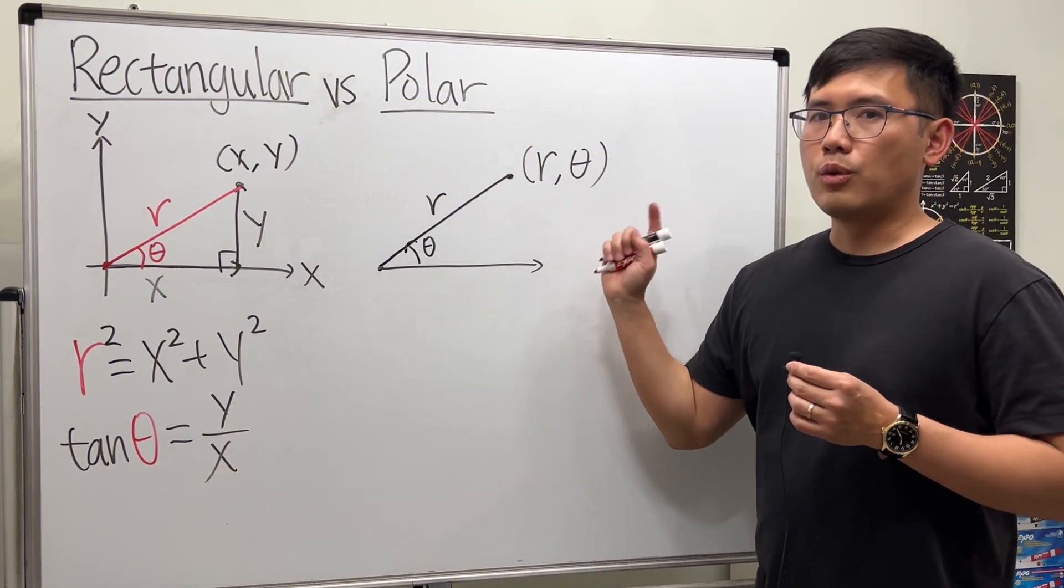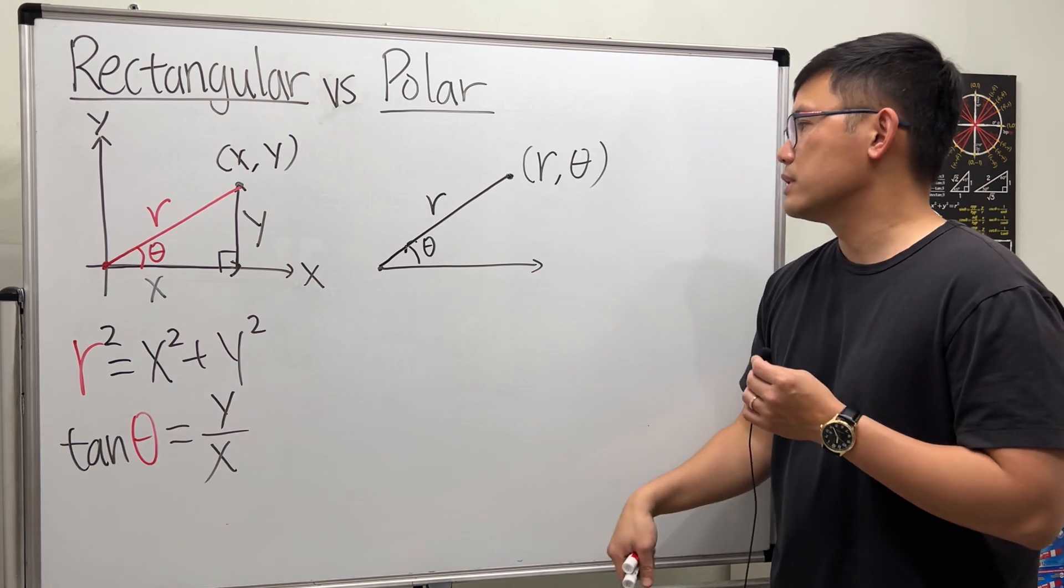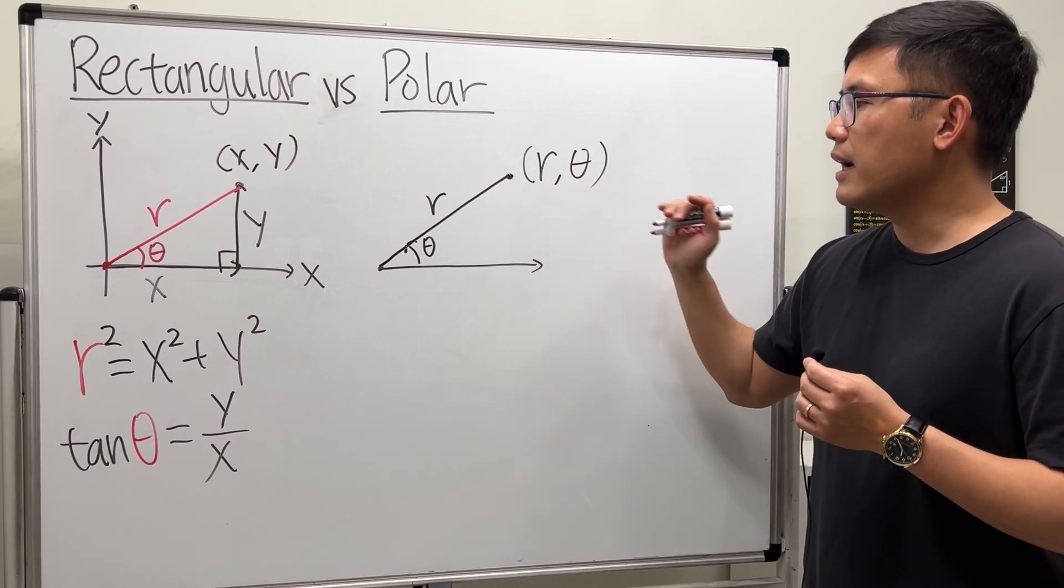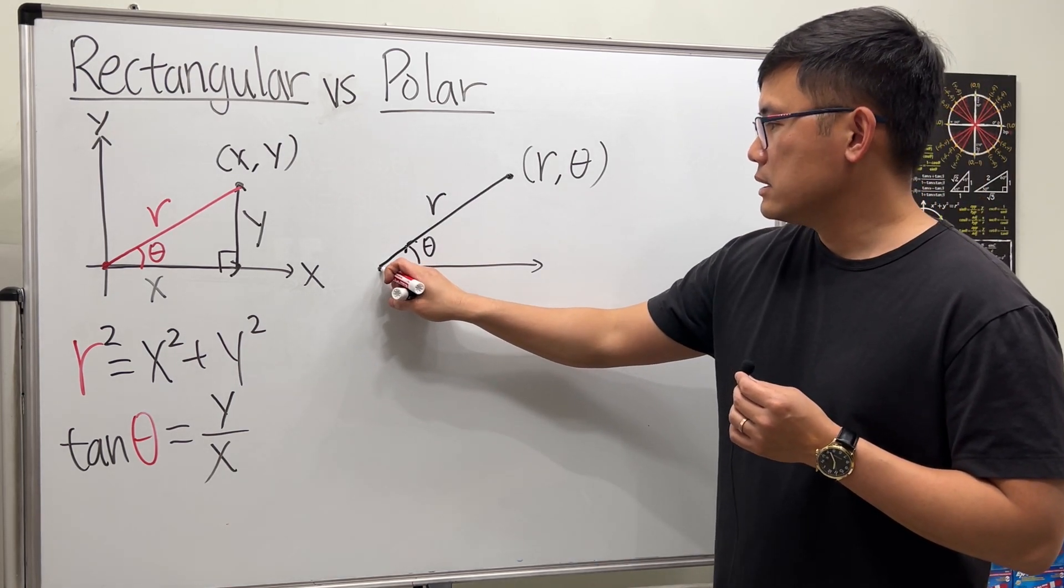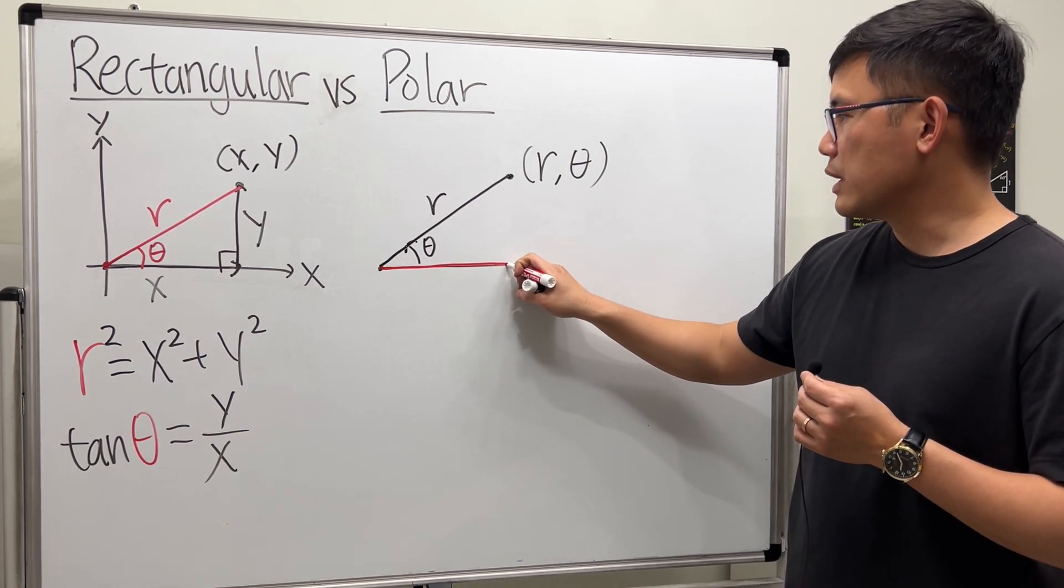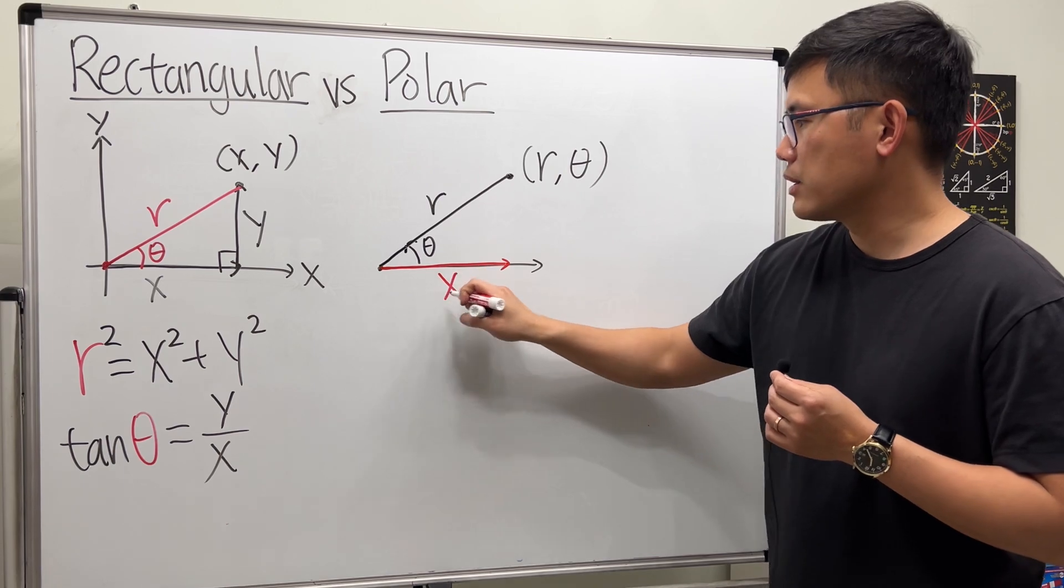Now let's go backwards. Suppose we have (r, θ) given. How can we figure out x and y? So x is the horizontal distance that we need. Let's call this x.